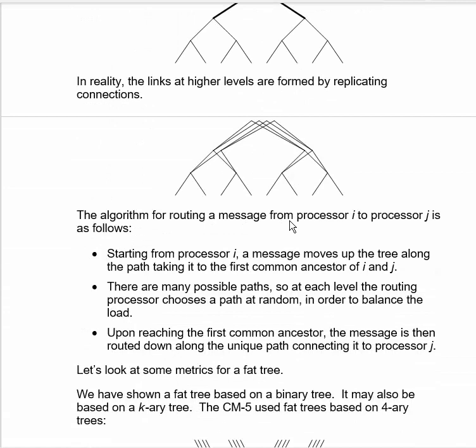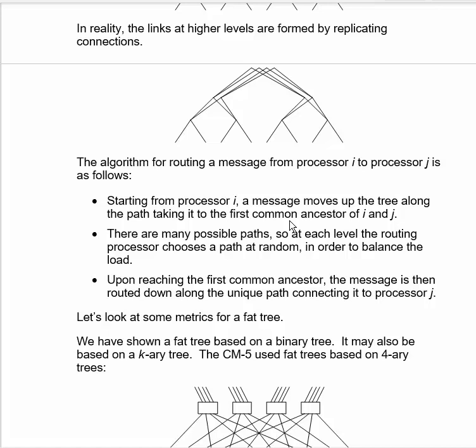If we're going to route a message from processor i to processor j, we start from processor i and move up the tree along the path, taking it to the first common ancestor of i and j. There are many possible paths, so at each level the routing processor chooses a path at random, or based on congestion of the link, and that will help balance the load. Once you get to the first common ancestor, the message is then routed down along the unique path connecting it to processor j.